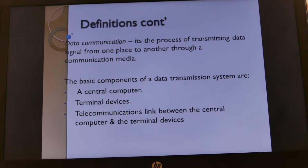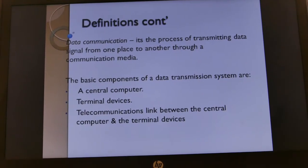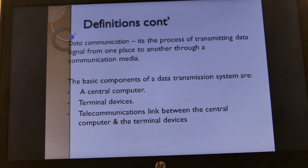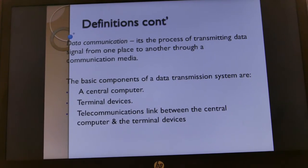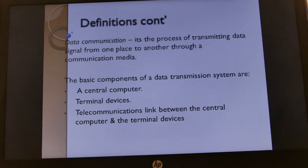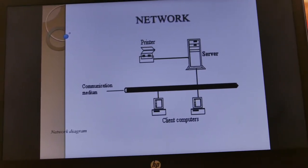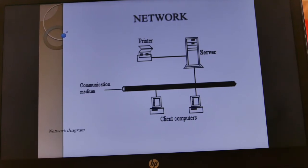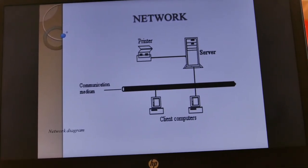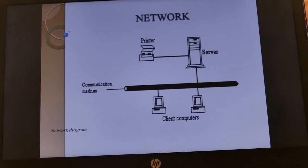We have some basic components of a data transmission system: a central computer, terminal devices that are attached, and the telecommunication link between the central computer and the terminal devices. We have a diagram explaining how a network is connected. In this diagram you can see the server connected to the communication medium, client computers connected to the communication media, and a printer as an example of resources shared on the network.